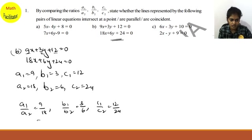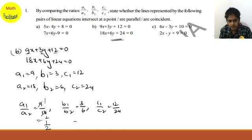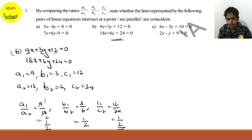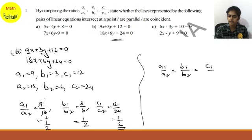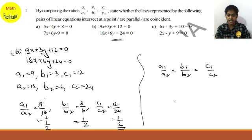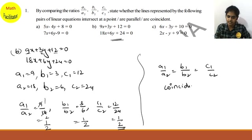Simplifying: 9/18 equals 1/2, 3/6 equals 1/2, and 12/24 equals 1/2. All three ratios are the same — 1/2 equals 1/2 equals 1/2. Since a1/a2 equals b1/b2 equals c1/c2, the lines are coincident lines. Therefore the lines are coincident.